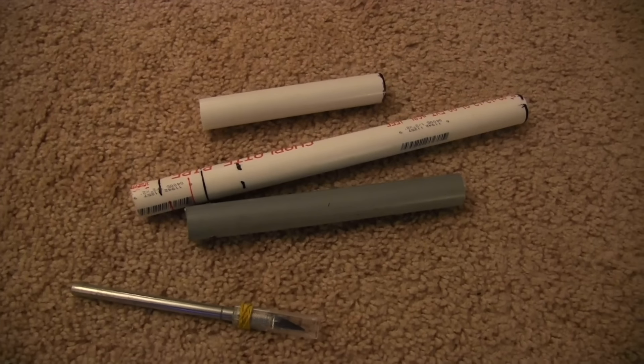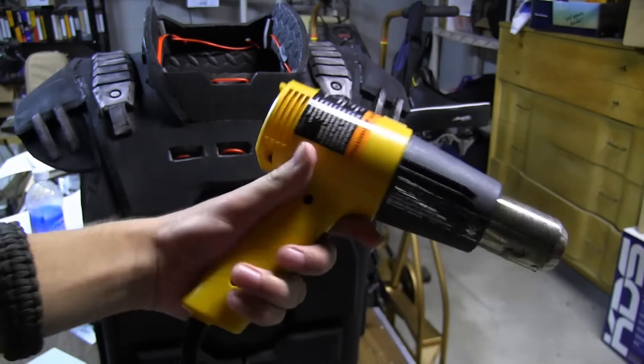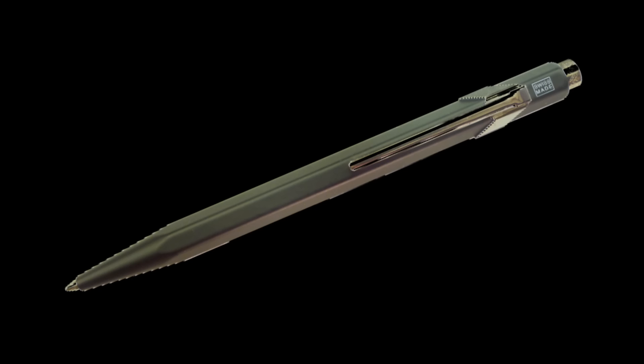Tools and materials. X-Acto knife or box cutter, PVC, pliers, hot glue gun, heat gun, EVA foam, paint, a pen, a spring.